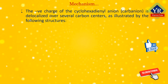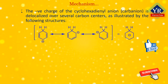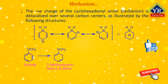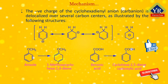The negative charge of the cyclohexadienyl anion (carbanion) is delocalized over several carbon centers as illustrated here. For the Birch reduction of mono-substituted aromatic substrates, the substituents generally influence the course of the reduction process. Electron-donating substituents, for example alkyl or alkoxyl groups, lead to products with the substituent located at a double-bond carbon center. The reduction of methoxybenzene (anisole) yields 1-methoxy-cyclohexa-1,4-diene. An electron-withdrawing substituent leads to a product where it is bound to a saturated carbon center. For example, benzoic acid is reduced to cyclohexa-2,5-diene carboxylic acid.